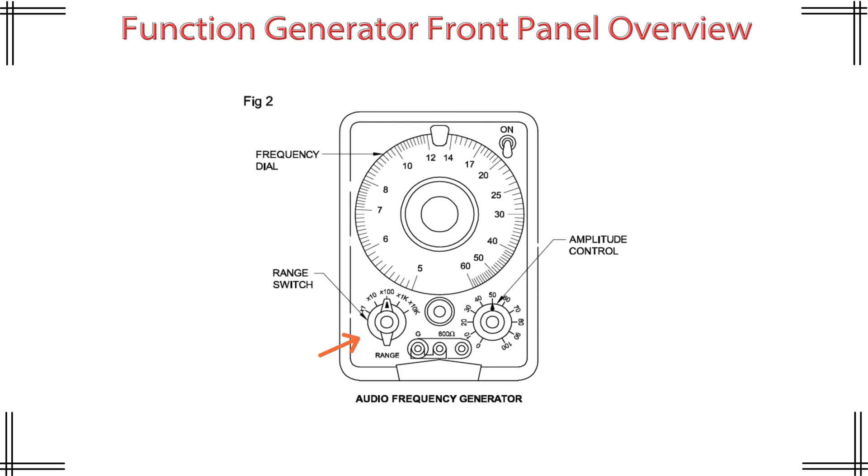Number two. Range switch. Lower left. Label: Range. Options: 10 times, 100 times, 1k times, 10k times, 70k times. Function: Multiplies the frequency dial value to determine the actual output frequency. Use: Switch between wide frequency bands efficiently.